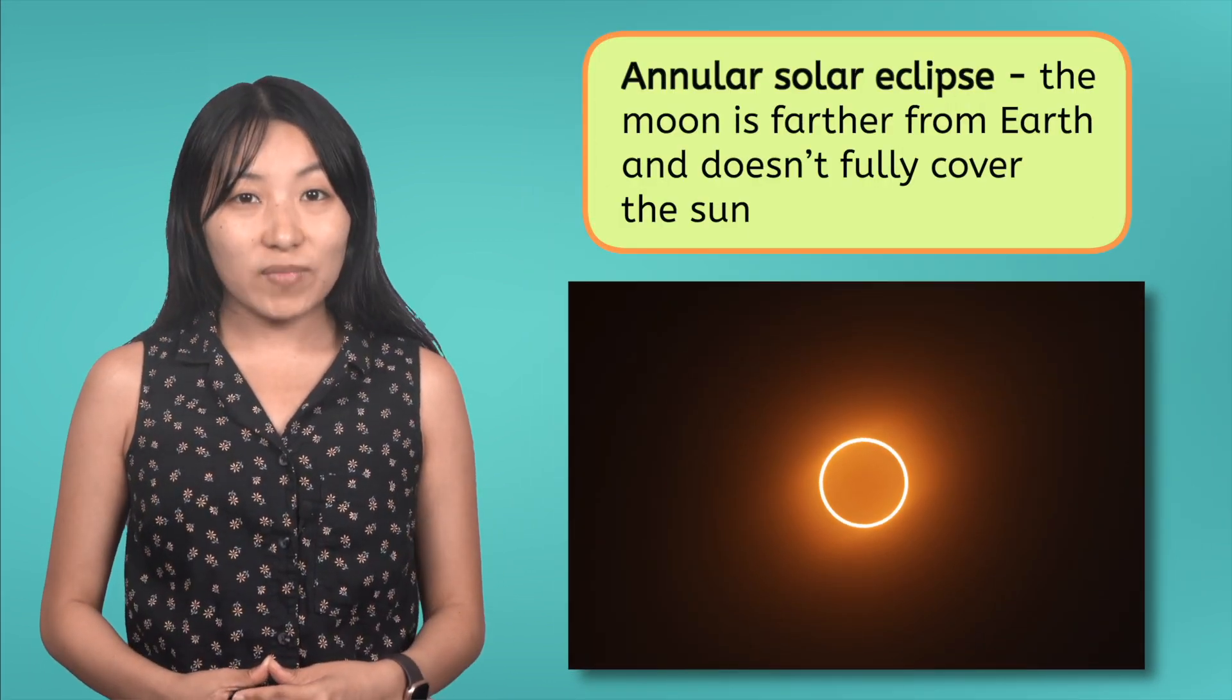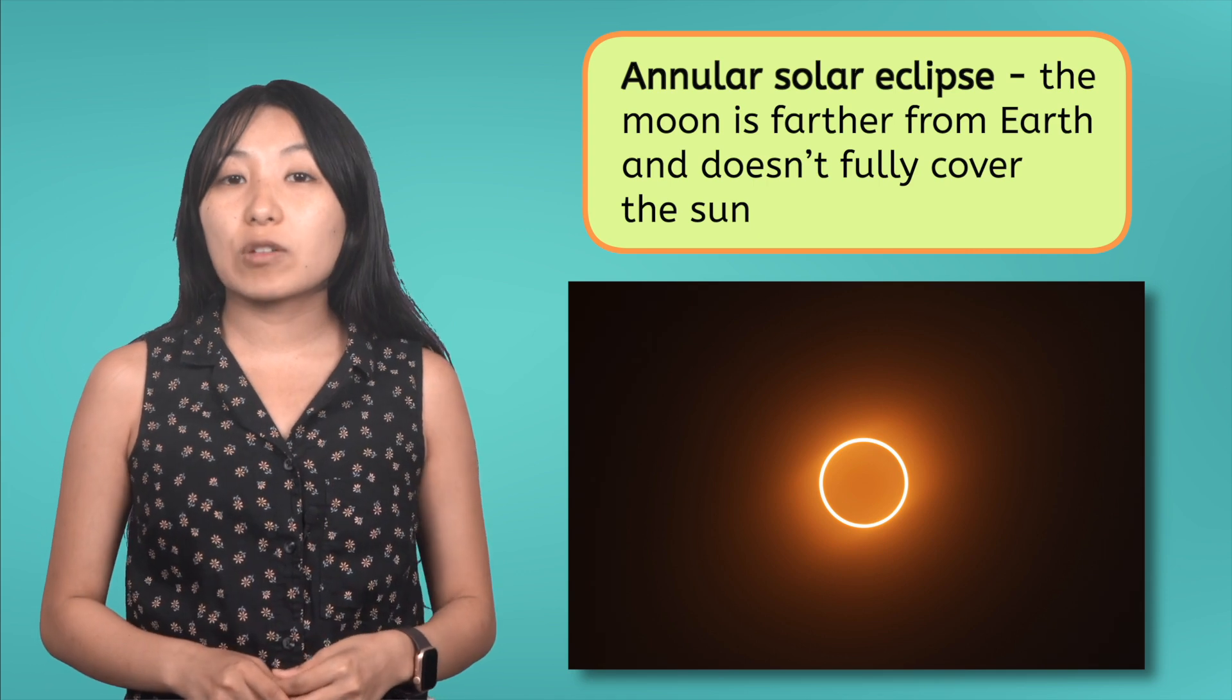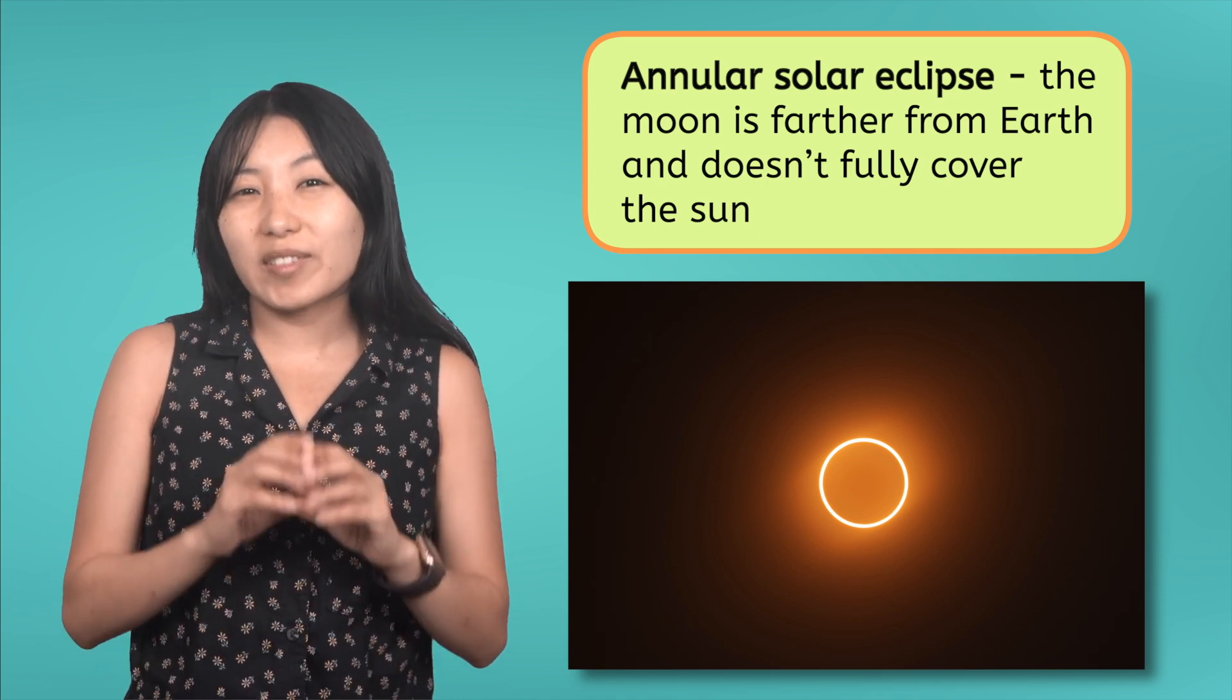In addition to a total and partial solar eclipse is an annular solar eclipse. This happens when the moon is farther from Earth in its orbit and appears smaller, so its shadow doesn't completely cover the Sun. Instead, it only hides the middle of the Sun, leaving a glowing circle of light called the Ring of Fire.